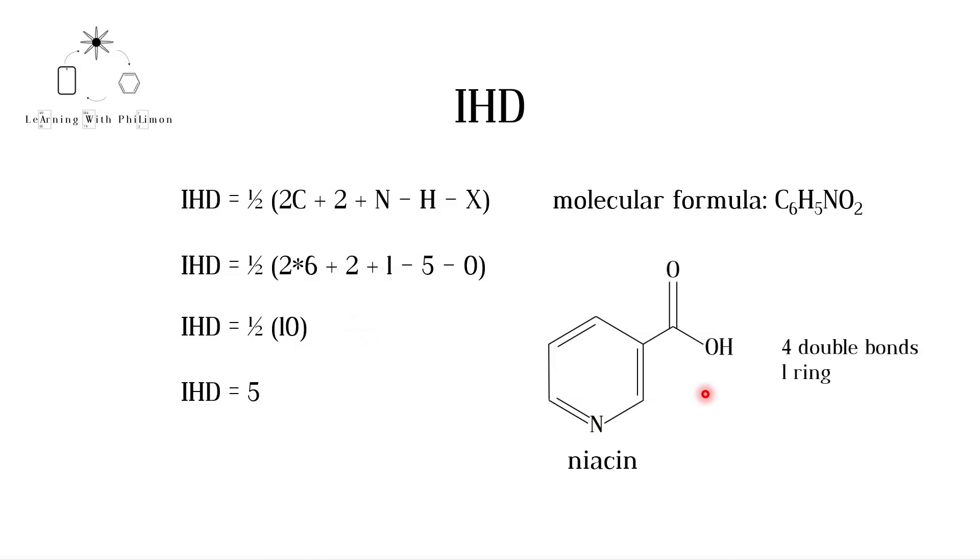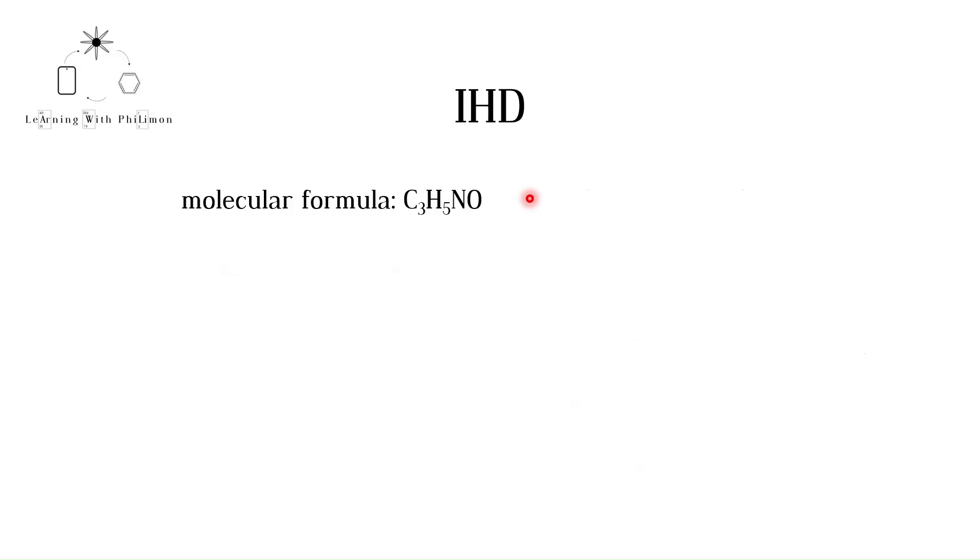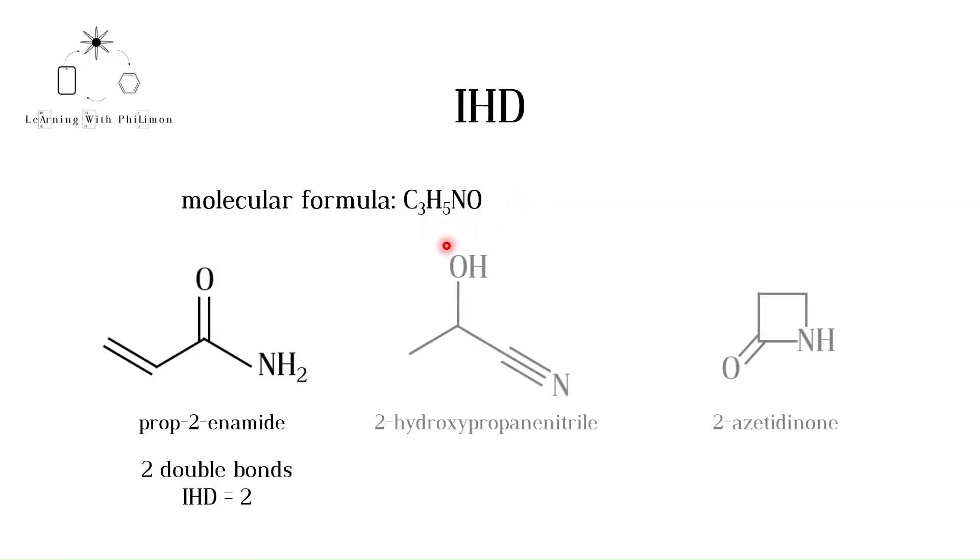If you do not remember this equation in a test or exam, you can also draw a possible structural formula. For example, if you have the molecular formula C3H5NO2, you could draw the skeletal formula below. There are two double bonds, so the molecule has an IHD of two. Note that there are many possible structures that could be drawn with the same molecular formula. Here are some other options. No matter which structure you draw, the IHD is always two for this molecular formula. In 2-hydroxy propanenitrile, there is a triple bond. In 2-azetidinone, there is a double bond and a ring. In all three cases, the IHD is equal to two.